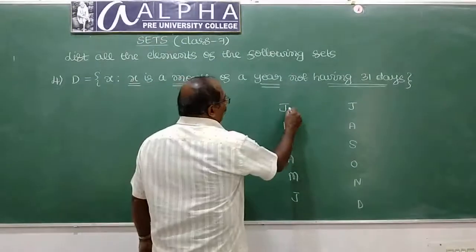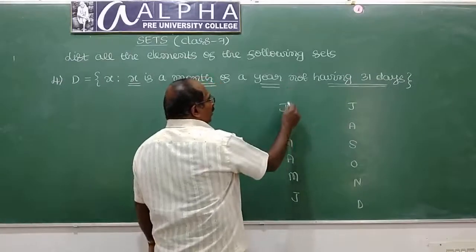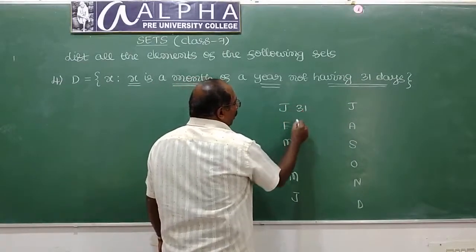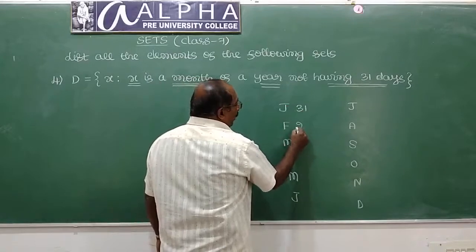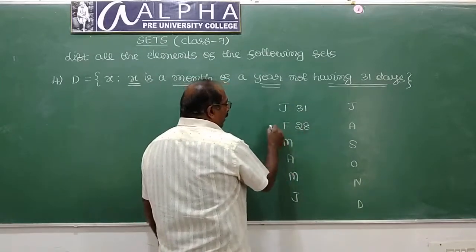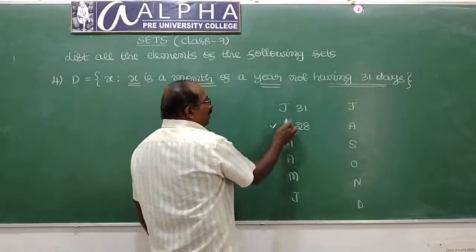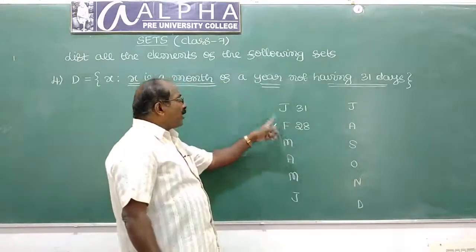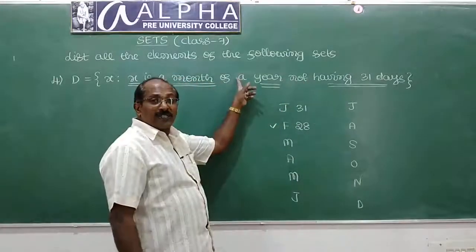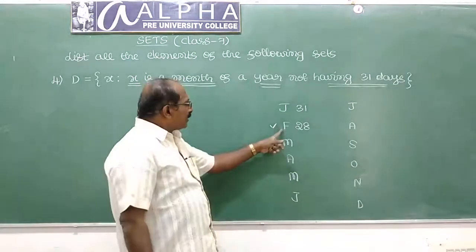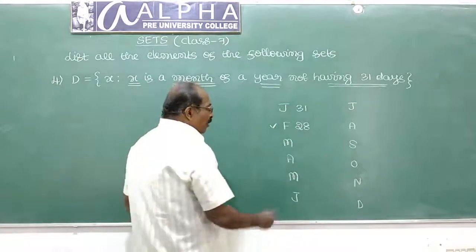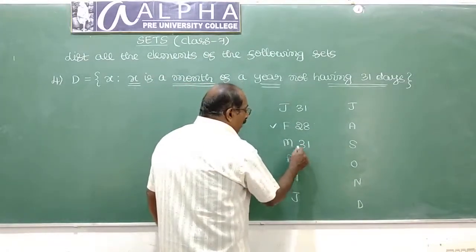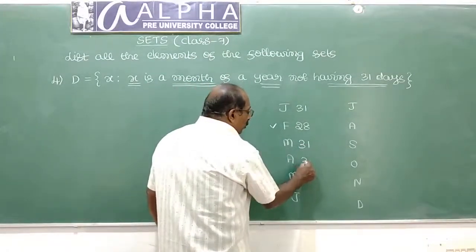January has 31 days, so it is not an element of set D. February has 28 or 29 days — it is a month not having 31 days. Therefore, February belongs to set D. March has 31 days, and April has 30 days.